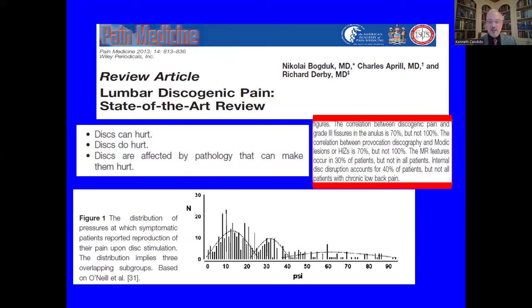Going back 10 years, Nick Bogduk, Charlie April, and Rick Derby postulated that discs can hurt — that discs are affected by pathology that can make them painful. In formulating these postulates, they looked at the use of provocation discography as a viable tool to assess individuals with back pain. They found a distribution of three pressures at which symptomatic patients reproduced their pain: low pressure around 10 PSI, approximately 30 PSI, and a lower percentage needing pressurization up to 60 PSI.